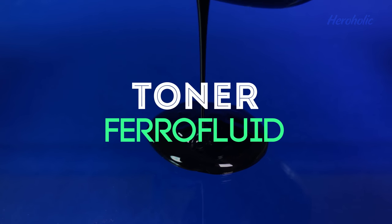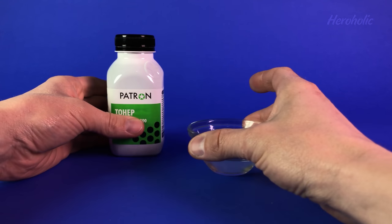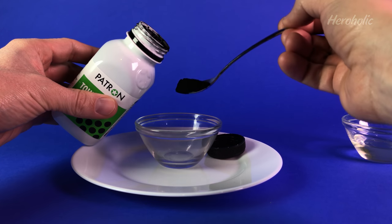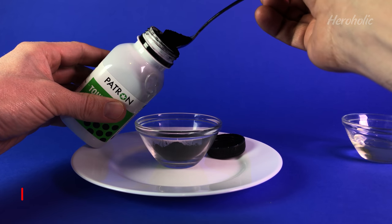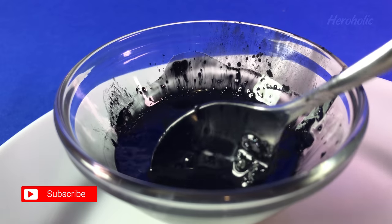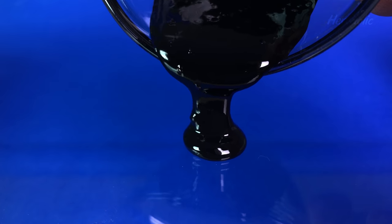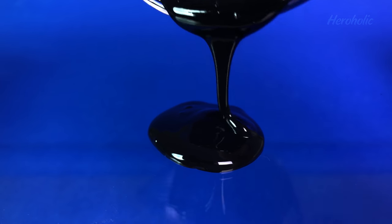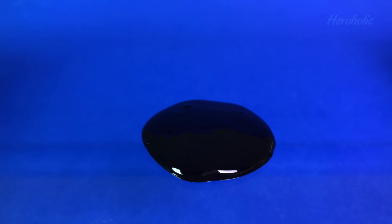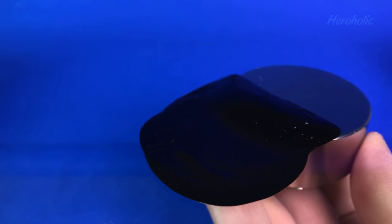Toner ferrofluid. For this one, we will need some toner and some vegetable oil. Now, let's mix it all up. Metal particles in toner follow the magnet and create the effect of ferrofluid.